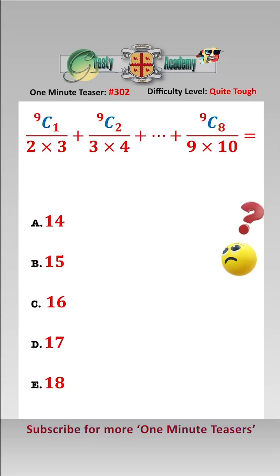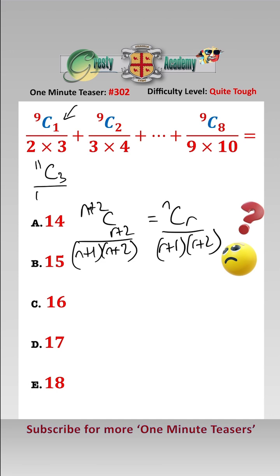With this type of question, we want to look at the identity (n+2)C(r+2) over (n+1)(n+2) equals nCr over (r+1)(r+2). Now, putting n equals 9 and r equals 1 into here, we get 11C3 over 10 times 11.